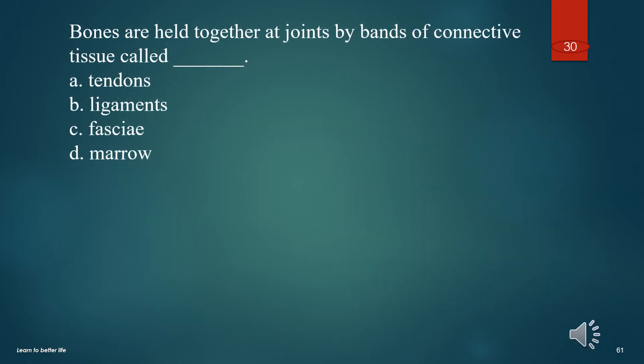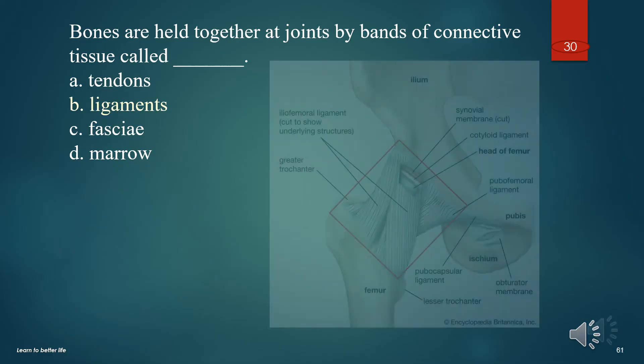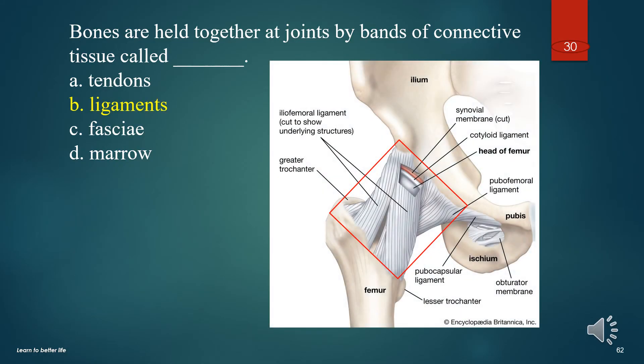Bones are held together at joints by bands of connective tissue called what? A. Tendons. B. Ligaments. C. Fascia. D. Marrow. The answer is B. Ligaments.